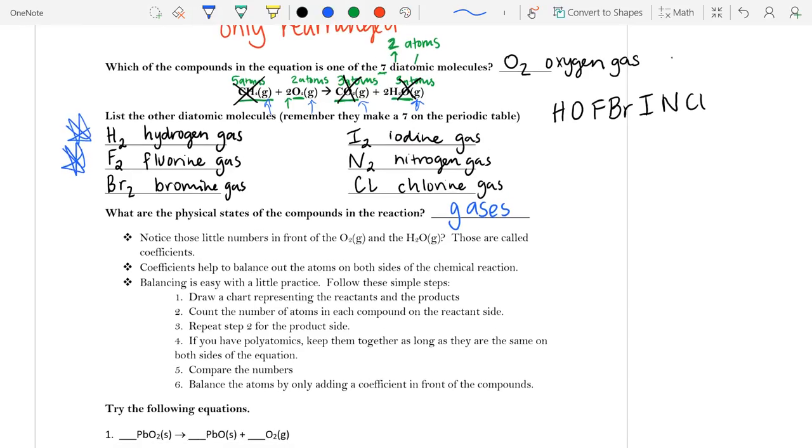And so if we look at our coefficients, right? We had a two in front of the oxygen and a two in front of the water. These are called coefficients. And coefficients help us to balance out the number of atoms on both sides.